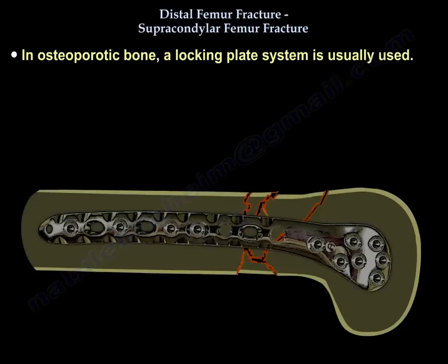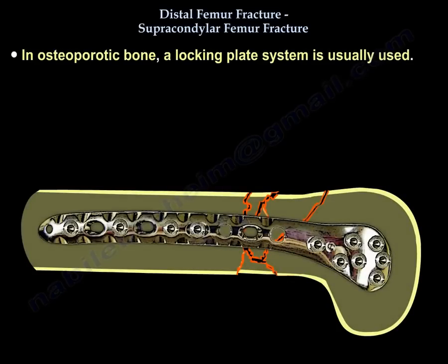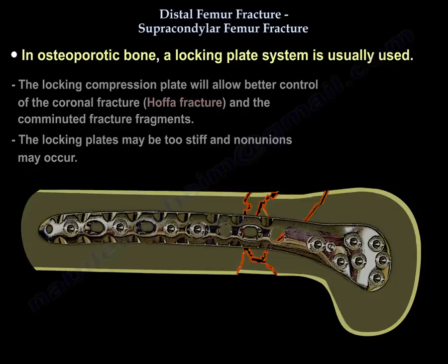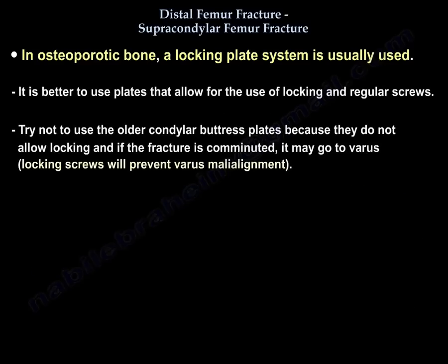In osteoporotic bone, a locking plate system is usually used. The locking compression plate will allow better control of the coronal fracture, the Hoffa fracture, and comminuted fracture fragments. The locking plates may be too stiff and nonunions may occur, so it is better to use plates that allow for both locking and regular screws. Avoid older condylar buttress plates because they do not allow locking, and if the fracture is comminuted it may go into varus. Locking screws will prevent varus malalignment.